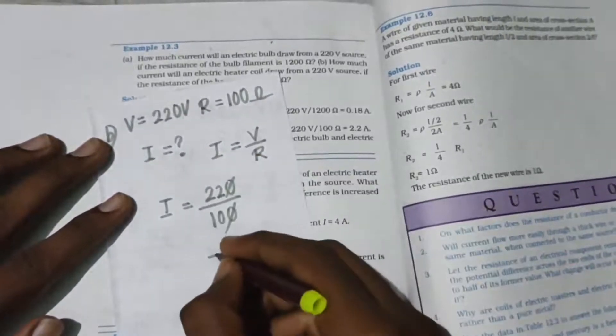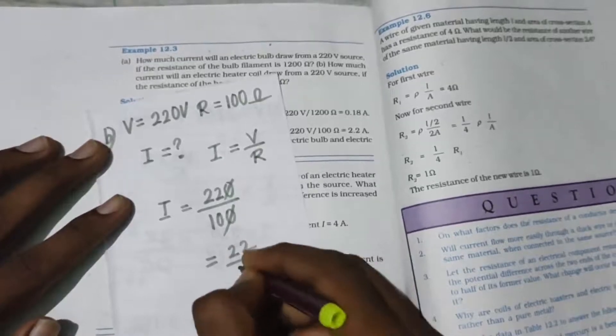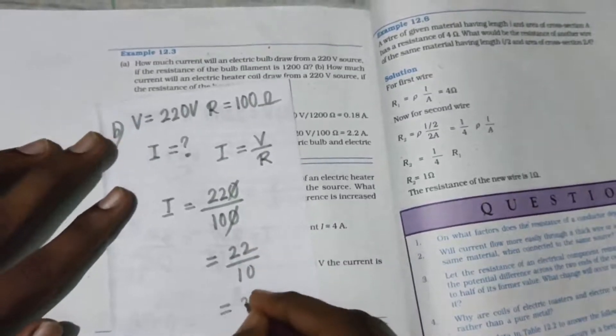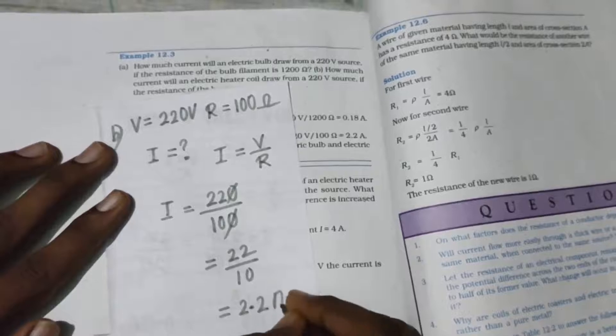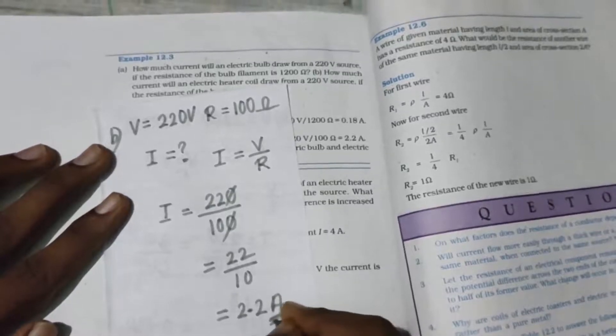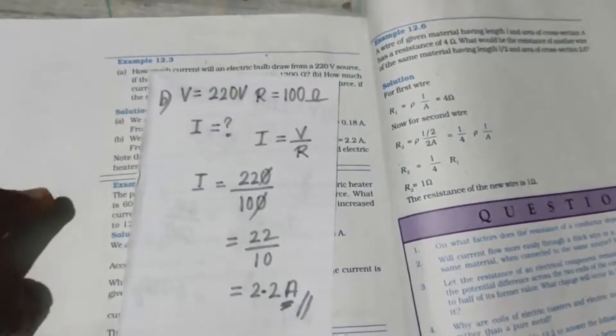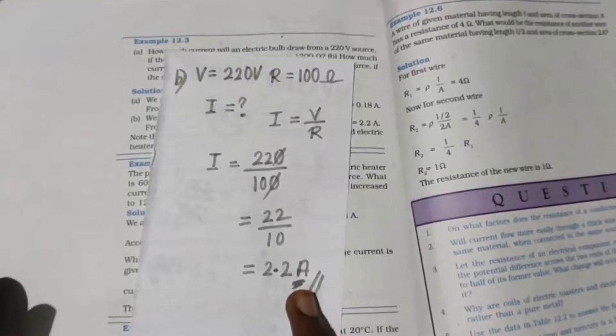So 100 cancels, 22 divided by 10, which is 2.2 ampere. Mention the unit, the unit is very important, otherwise they will cut your marks. Final step: the unit is very important.